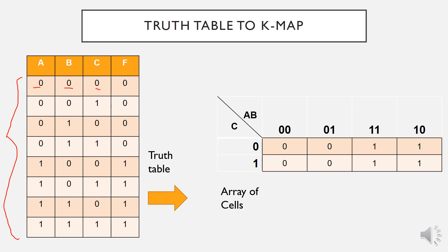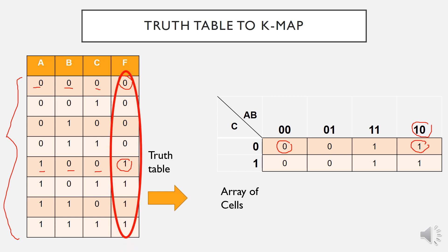So A, B is 0, 0 and C is 0, and the output will be 0 — and here the output is 0. Another example: we have A, B, C equal to 1, 0, 0 and the output is 0. From here we know that this is 1, 0, 0 and the output is equal to 1. So the whole output can be mapped into the K-Map array of cells.